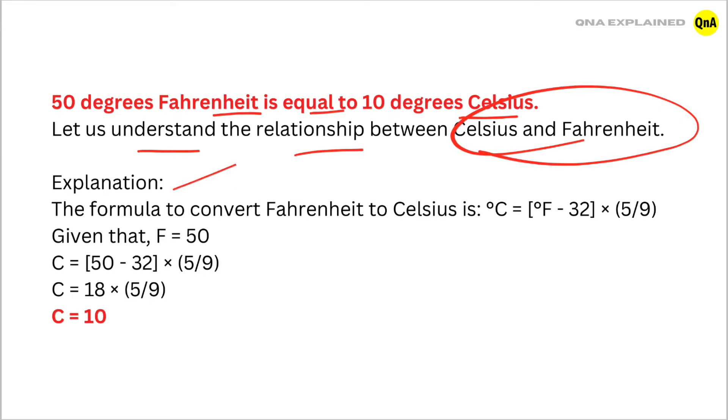Explanation: The formula to convert Fahrenheit to Celsius is degree Celsius equals degree Fahrenheit minus 32 times 5 upon 9.